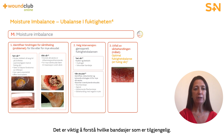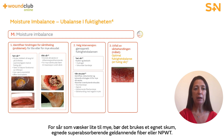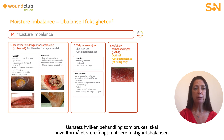Understanding what dressings are available for use is important. For a dry wound, a hydrogel or hydrocolloid product is appropriate. For low to high exuding wounds, an appropriate foam, super absorbent gelling fibre or negative pressure wound therapy may be used. Whatever the treatment, the main objective should be optimising moisture balance.